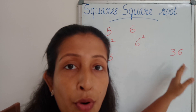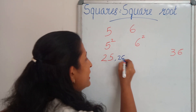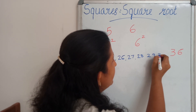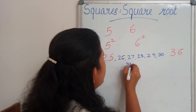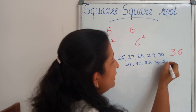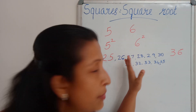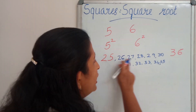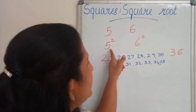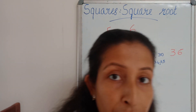We are going to find out how many non-perfect square numbers. After 25: 26, 27, 28, 29, 30, 31, 32, 33, 34, and 35. The next number is 36 — leave that. We are going to count how many numbers: 1, 2, 3, 4, 5, 6, 7, 8, 9, 10. So in between 25 and 36, we got 10 non-perfect square numbers.